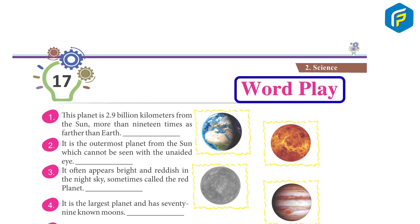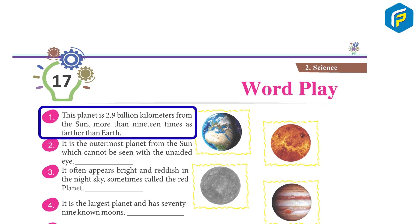Chapter 17 Word Play. 1. This planet is 2.9 billion kilometers from the Sun, more than 19 times as farther than Earth. Uranus.